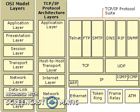TCP/IP is a family of protocols. A few provide low-level functions needed for many applications — these include IP, TCP, and UDP. Others are protocols for doing specific tasks, such as transferring files between computers, sending mail, or finding out who is logged in on another computer. Initially, TCP/IP was used mostly between minicomputers or mainframes, which had their own disks and were generally self-contained.